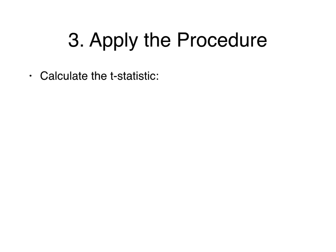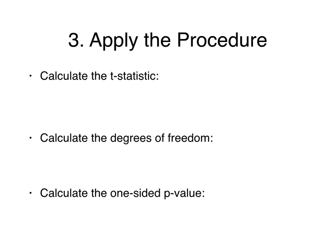Next, we will carry out the one-sided t-test. To do this, we will first calculate the t-statistic, then calculate the degrees of freedom, and finally calculate the one-sided p-value of our sample. The t-statistic is calculated as x-bar minus mu, divided by sigma-hat over the square root of N, where x-bar is the sample mean, mu is the population mean, sigma-hat is the sample standard deviation, and N is the sample size.